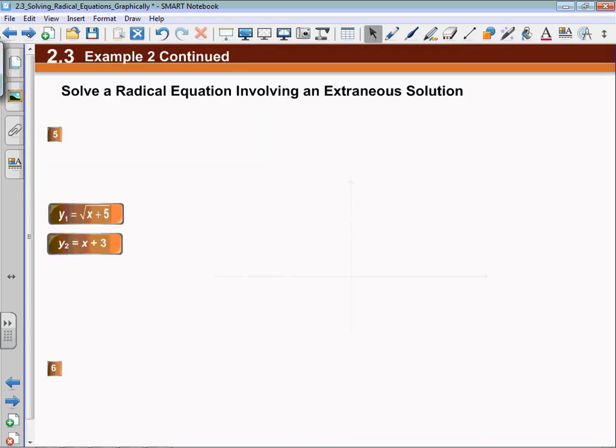For solving these graphically, unless one side is already equal to 0, don't manipulate it to 0. When you have the square root of x plus 5 equals x plus 3, then all you need to do to solve this graphically is make the left-hand side y1 and the right-hand side y2, or vice versa. It doesn't really matter what you make y1 or y2.